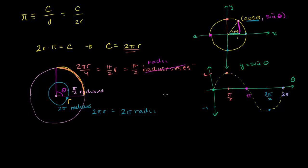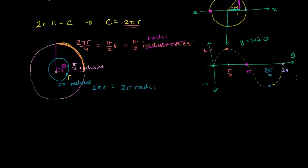I want to do one last visit with pi. Pi seems to have some type of mystical power — and we've shown this in the calculus playlist — via Euler's formula: e to the i theta is equal to cosine of theta plus i sine of theta.